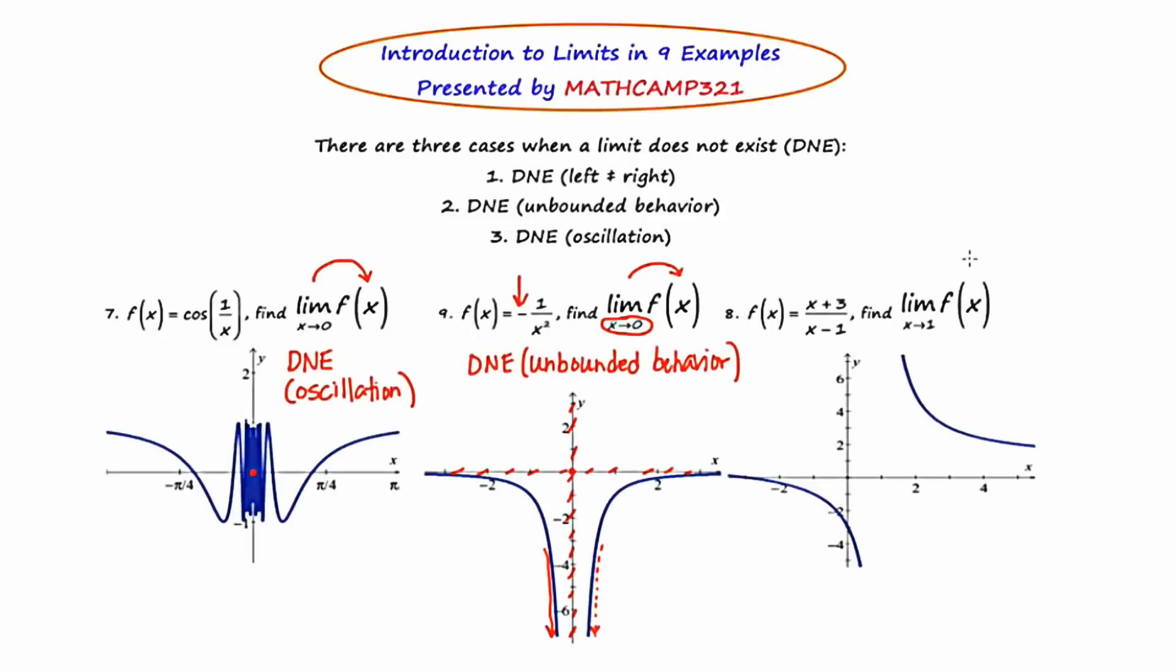Looking at the last example, number eight, is just a rational function f(x) equals x plus three over x minus one. Now you might remember from a pre-calculus class that there's going to be a vertical asymptote at x equals one. So I'm going to go ahead and draw that in. And there's going to be a horizontal asymptote at y equals one. And the reason that's going to happen is because the degrees of the top and the bottom are the same. So the ratio of the leading coefficients gives us y equals one.